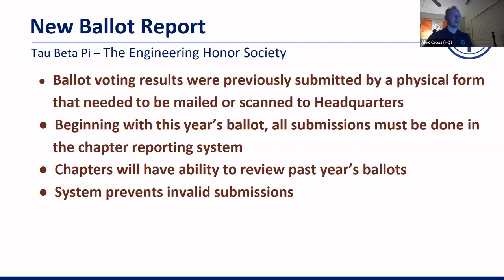The new ballot report has been added to the reporting system this year. Previously, chapters would either need to mail or scan in a copy of a physical ballot form — that ended up taking a long time and being quite an extensive process. Beginning with this year, all submissions must be done in the chapter reporting system; we will no longer be accepting the old form. Chapters will also have the ability in the future to review past years' ballots, so future officers will be able to look back and see how the chapter voted on certain things.